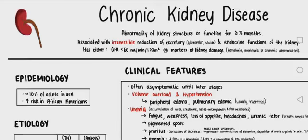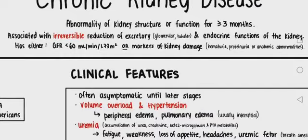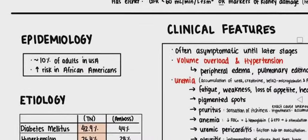Welcome to another video. In this video we will study about chronic kidney disease. It is the abnormality of kidney structure and function which is greater than three months. It is associated with irreversible reduction of excretory and endocrine function of the kidney, and the amount of GFR is less than 60 ml per minute. The markers of kidney damage are hematuria, proteinuria, or anatomic abnormalities.